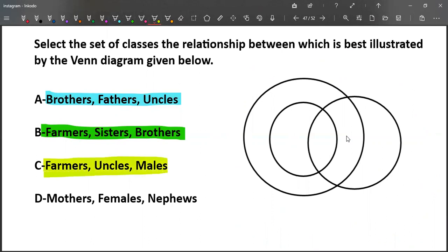Let us come to farmers, uncles, and males. Let us check whether this diagram suits for these three classes. We know all uncles are males.